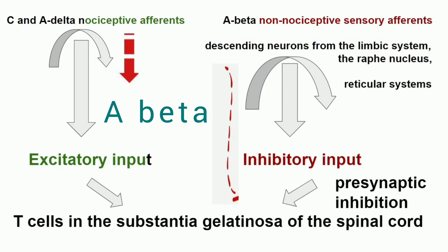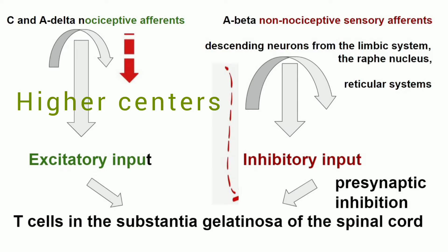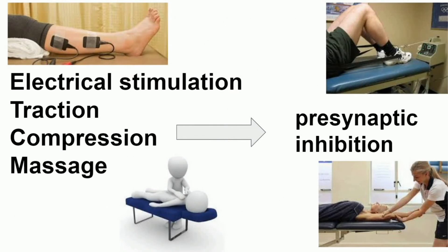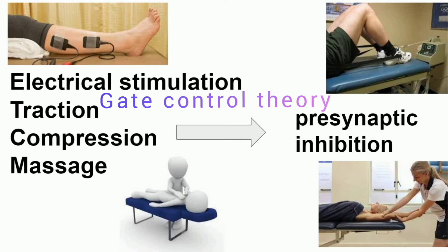We describe this with a term called presynaptic inhibition. A-beta fibers carry non-painful impulses and cause presynaptic inhibition, so the pain impulse has not been taken to the higher centers. This is Melzak and Wall's gate control theory — the gate has been closed at the level of the spinal cord.